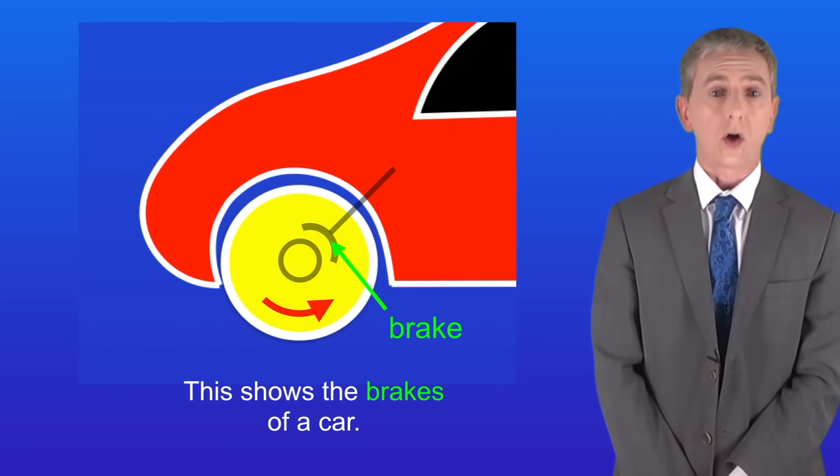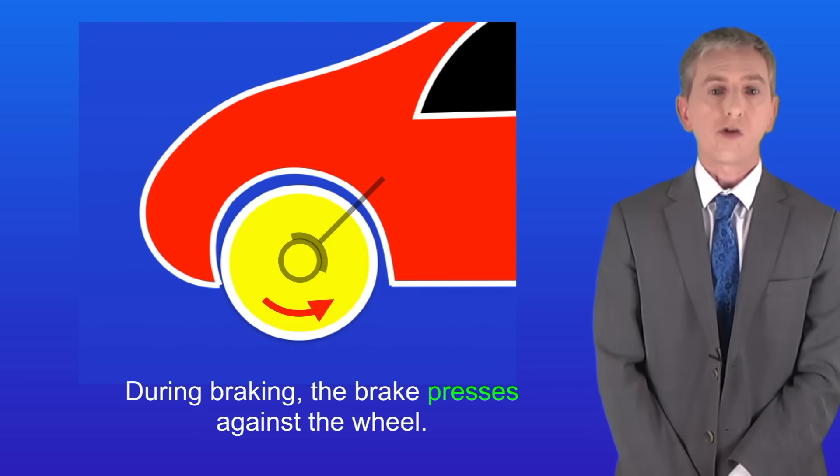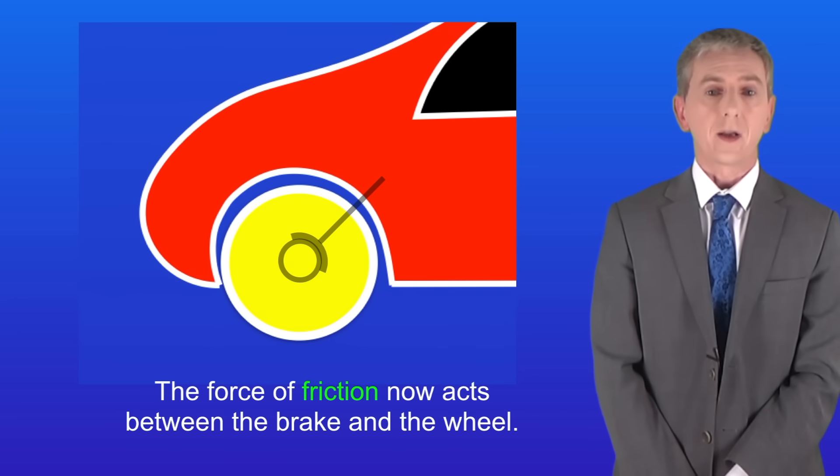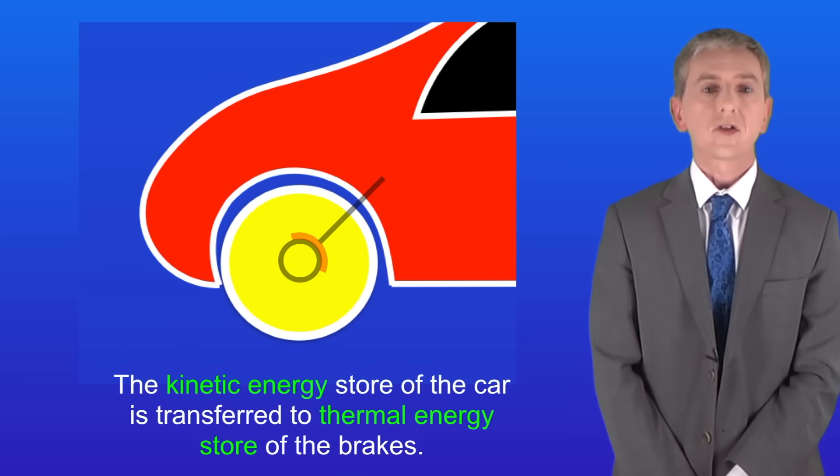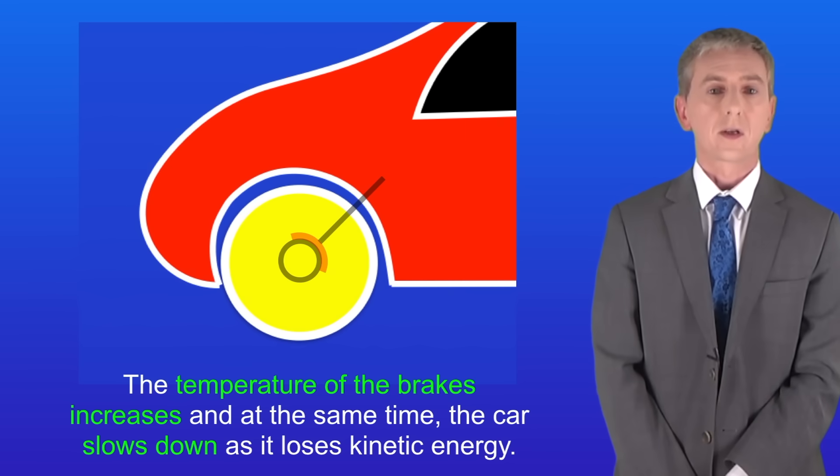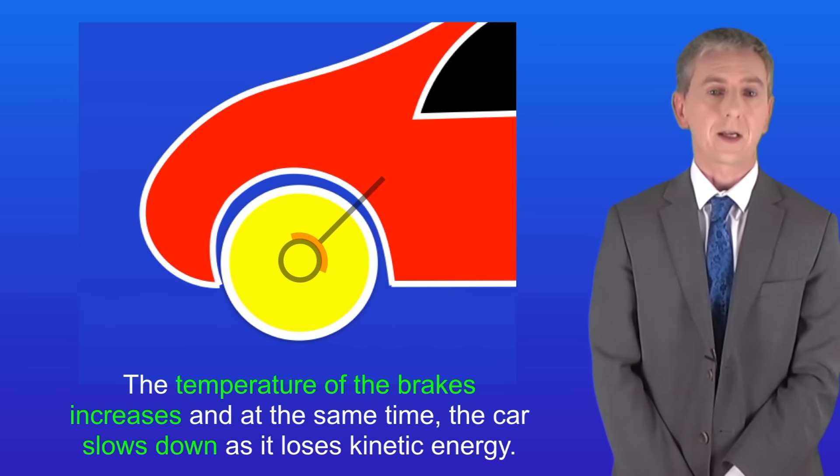This shows the brakes of a car. During braking the brake presses against the wheel like this. The force of friction now acts between the brake and the wheel. The kinetic energy store of the car is transferred to the thermal energy store of the brakes. So the temperature of the brakes increases and at the same time the car slows down as it loses kinetic energy.